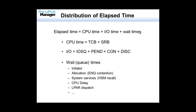When we talk about queue times, we often think just about initiator queue time. But really a queue is simply a wait of any kind, and there are all kinds: you can wait for initiators if there's not enough, wait for allocation, enqueue if a resource is in use by another application, wait for system services such as HSM recalls. CPU delay is prominent and there's virtually always some in a shared environment. LPAR dispatch time is key to understanding the performance of your systems and not always readily visible.